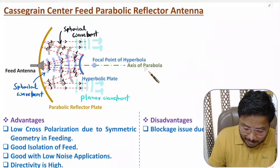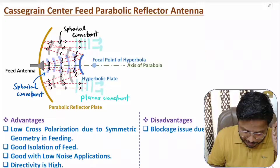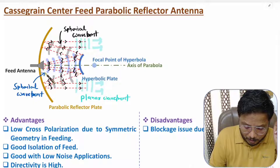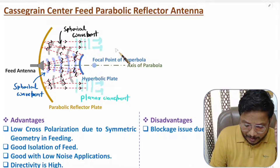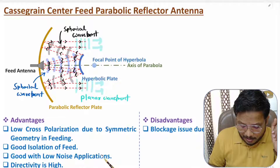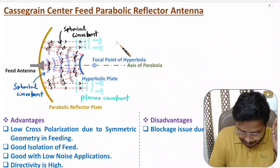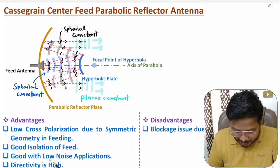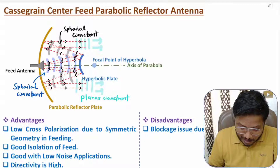This design is symmetric with respect to the center and axis of parabola with respect to feeding, so it has lower cross polarization. It also provides good isolation of feed, as the feed is protected from the outer environment, giving better isolation. It is also good for low noise applications because the feed is isolated with respect to the external environment, offering better characteristics for low noise applications. Additionally, it has high directivity.